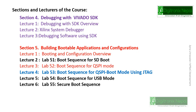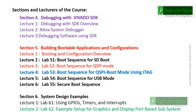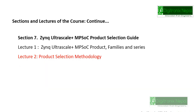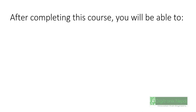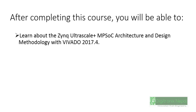Section 5 is building bootable applications with boot sequence for SD, QSPI, QSPI with JTAG, and USB modes. Section 6 is system design with examples, where we are going to include GPIO integration and other peripheral integration. Section 7 is product selection overview — Zynq UltraScale+ MPSoC product selection, device families, and details, so we can select specific products for our applications.